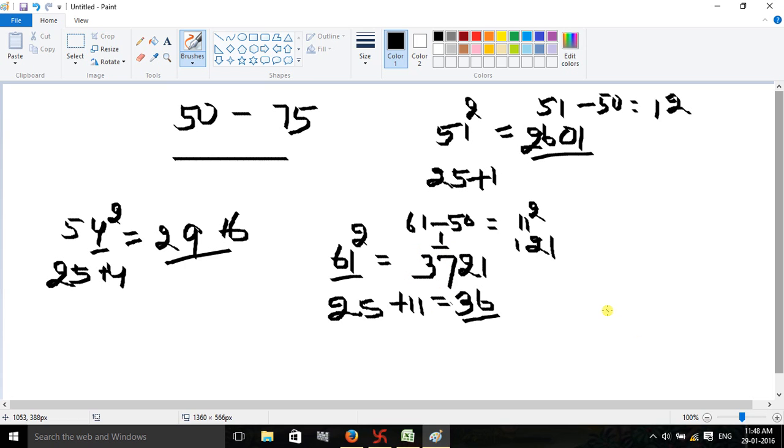Now calculate the square of 71. 71 is 21 more than 50. The square of 21 equals 441. Write 41 and carry forward 4. Next, add 25 plus 21 equals 46, plus 4 equals 50. Your answer is 5041.